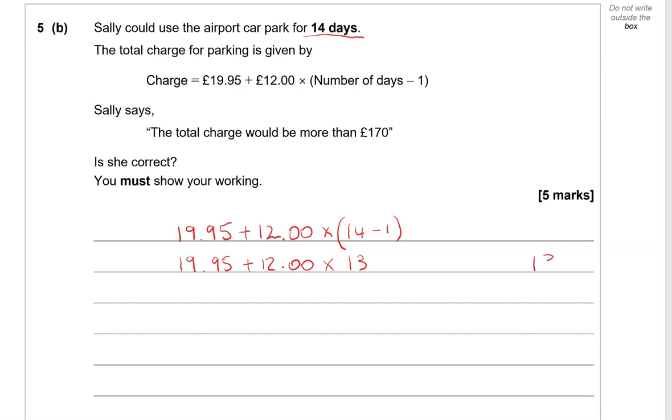14 - 1 is 13. Now applying BIDMAS, we need to do the multiplication before addition. So 12 × 13 first. 2 × 3 is 6, 2 × 1 is 2. Putting 0 down, 1 × 3 is 3, 1 × 1 is 1. So 156. So £19.95 + 156.